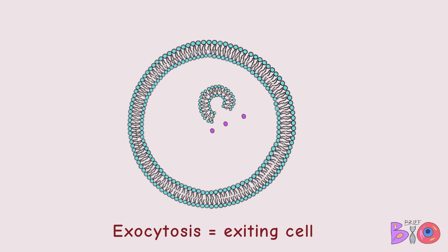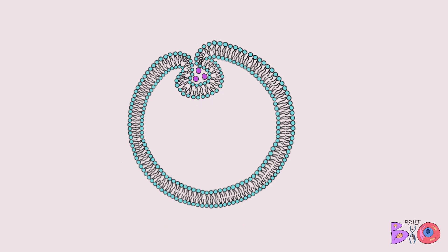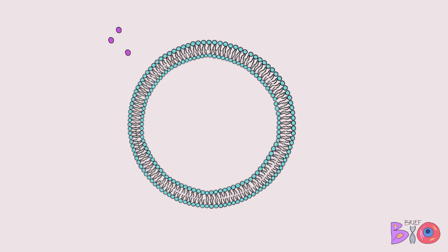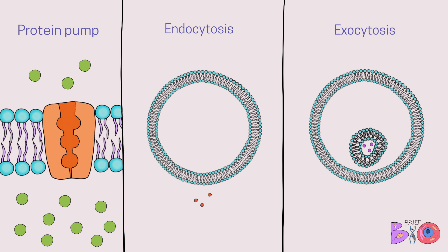Exocytosis is the opposite of endocytosis. "Exo" means exiting, so this transport involves molecules exiting the cell. The molecules will be put into a vesicle, the vesicle will transport them to the membrane, and then the vesicle will fuse with the cell membrane to release the molecules outside of the cell.